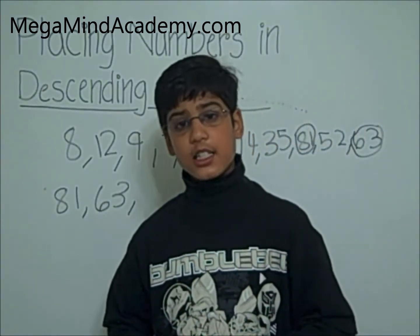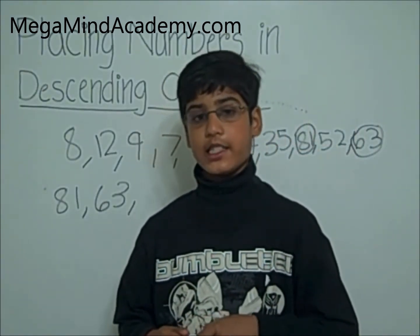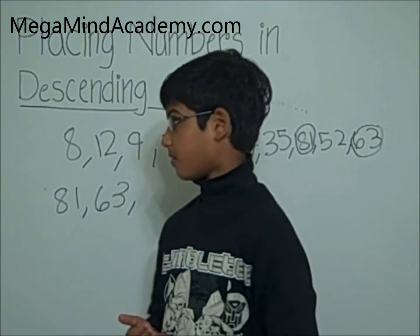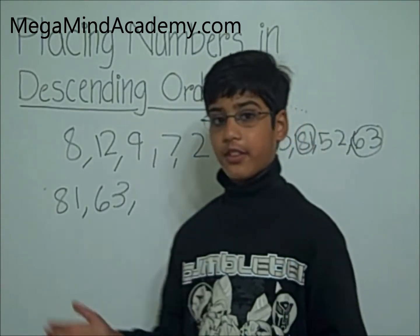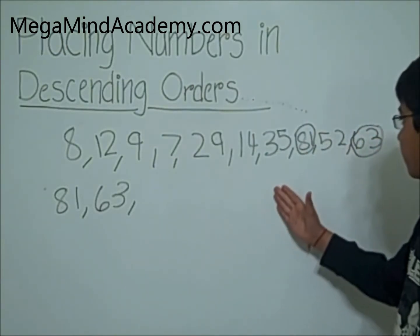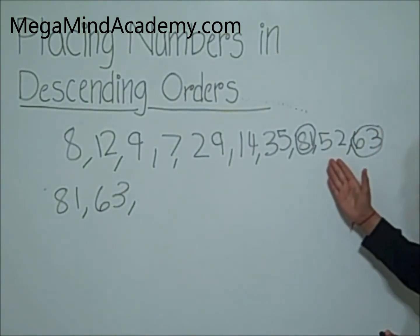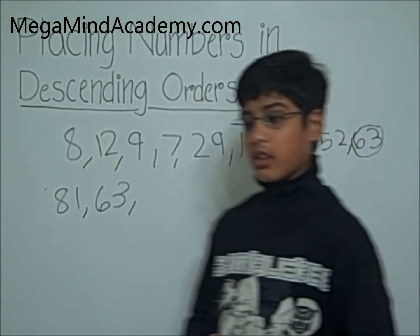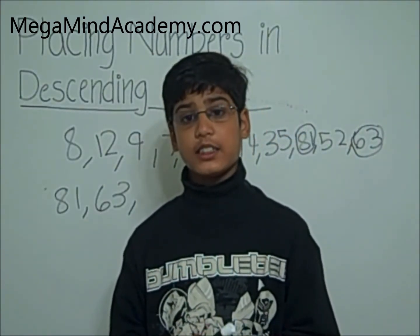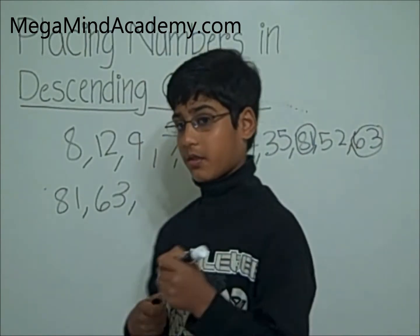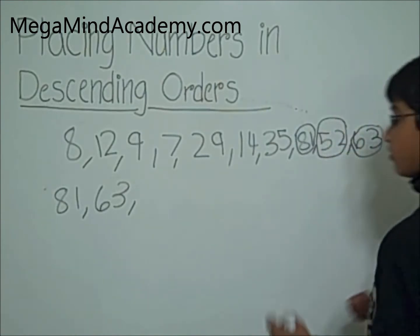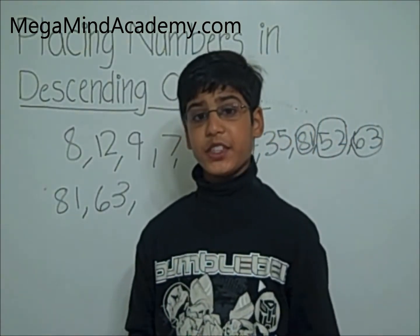Now let's find the closest number to 63. Are there any numbers from 50 to 60? We have 8, 12, 9, 7, 29, 14, 35, and 52. Yes! There is a number from 50 to 60. It is 52. So we are going to place 52 next.